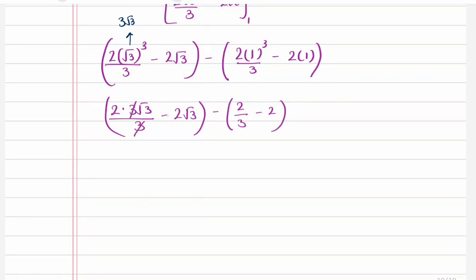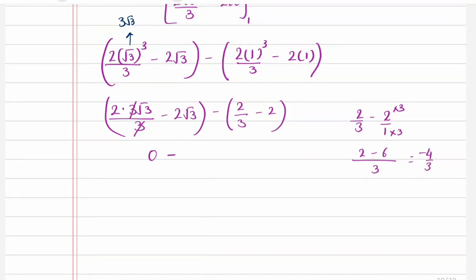3 divided by 3 is 1, so we are left with 2 root 3 take away 2 root 3, which is 0, minus 2 thirds minus 2. Solving the fractions: 2 minus 6 over 3 gives us minus 4 over 3. But there's a minus outside, so that gives us positive 4 over 3, which is our answer.